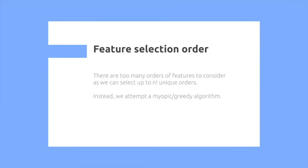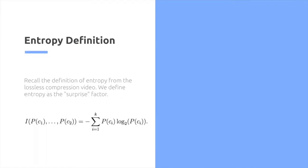So next up is selecting features. There are too many orders of features to consider. You don't actually know which one is better, which one can we actually calculate mathematically to improve. So instead we're going to attempt a myopic slash greedy algorithm to look at the search space. We call that we learned from the previous video, from the lossless data compression, this concept of entropy, which is the surprise factor. We define the equation below to be our entropy function, which takes a series of probabilities and multiplies them.